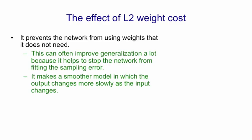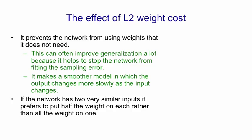It also makes a smoother model in which the output changes more slowly as the input changes. If the network has two very similar inputs, when you put in an L2 weight penalty it prefers to put half the weight on each rather than all of the weight on one as shown on the right here. If the two inputs are very similar those two networks will produce very similar outputs, but the one with the halved weights will have much less extreme changes in its output when you change the inputs.